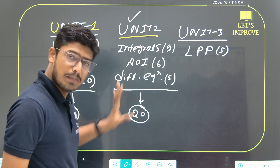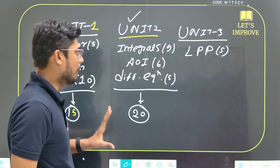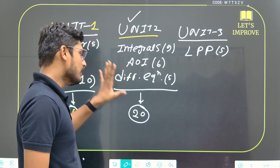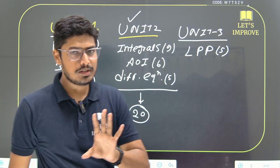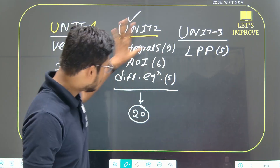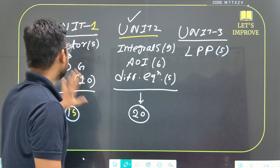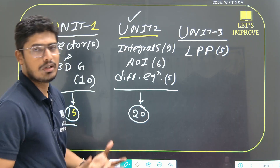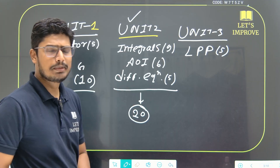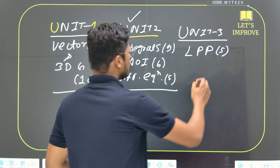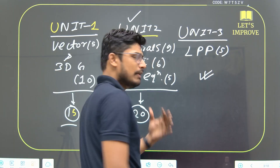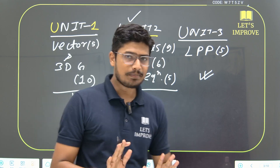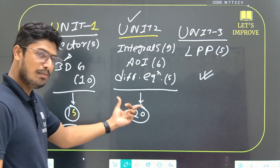You will get the maximum number of marks from Unit 2, and it is very achievable. If you prepare well, you will score high. Then move to Unit 1 for strong scoring with moderate effort. Finally, LPP gives you the minimum marks but also requires minimum time to prepare. So the order is: first, maximum marks with maximum effort; then high marks with less time; and lastly, minimum marks with minimum time.